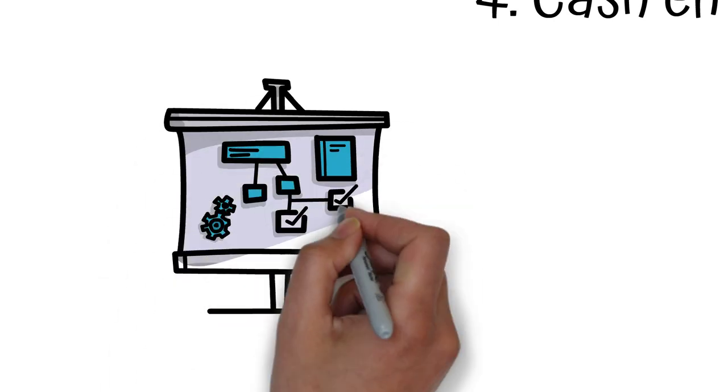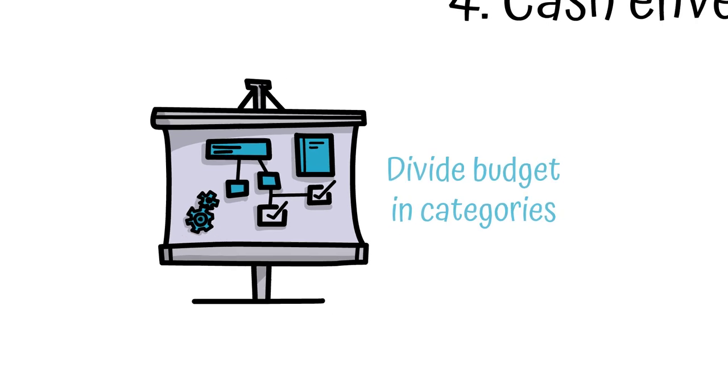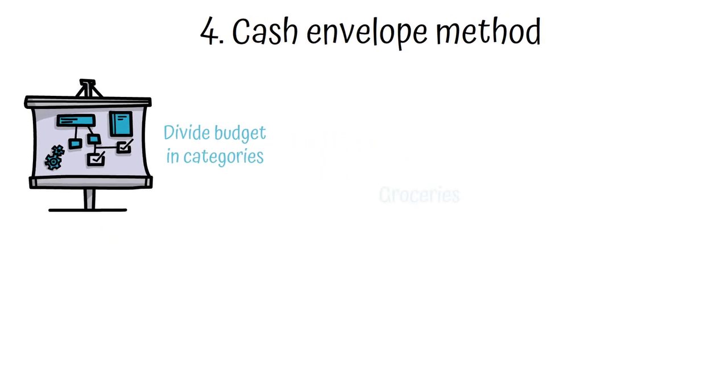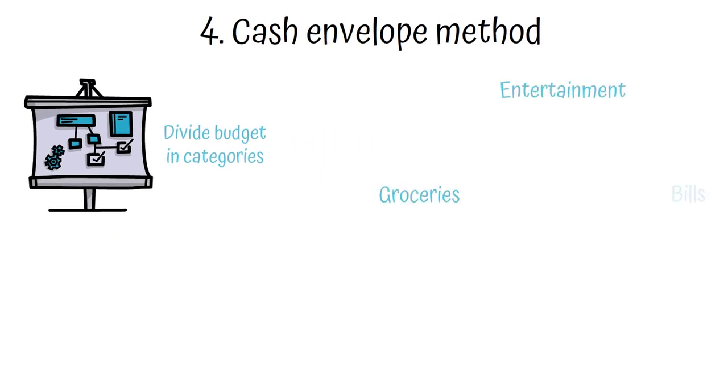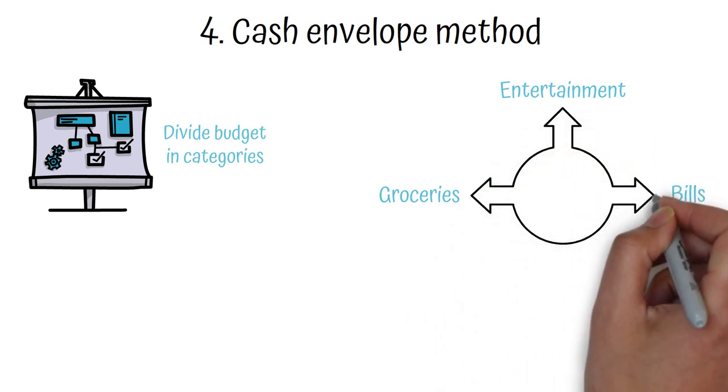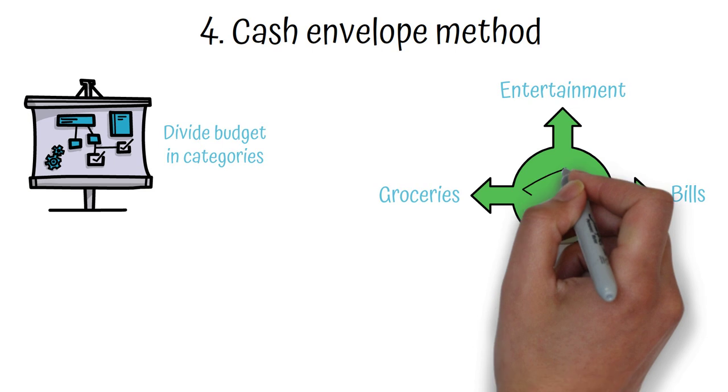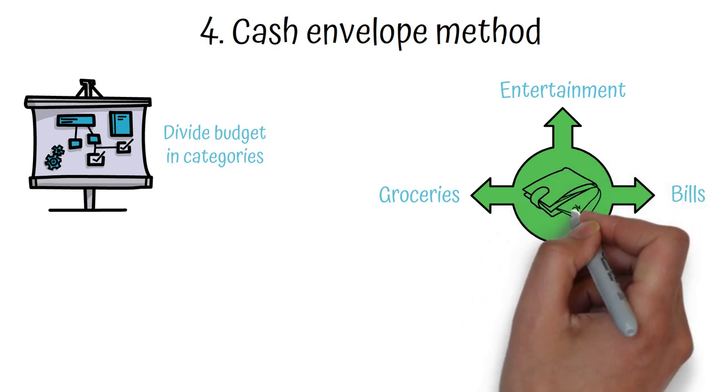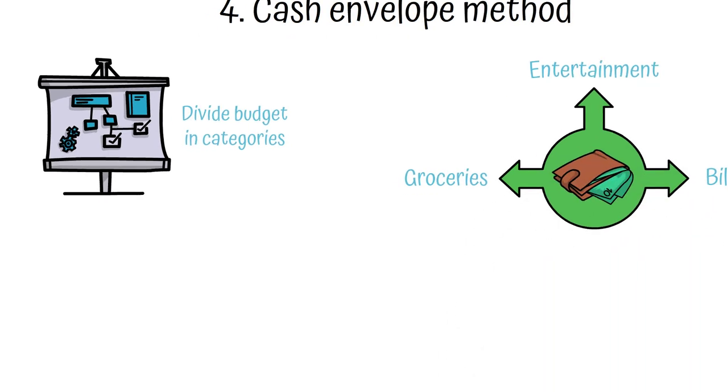It involves dividing your budget into different categories such as groceries, entertainment, and bills, and setting aside a specific amount of cash for each category in separate envelopes or in a wallet. When you need to make a purchase in one of these categories, you take the cash out of the appropriate envelope and use it to pay for the item.